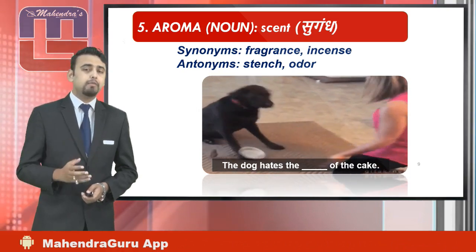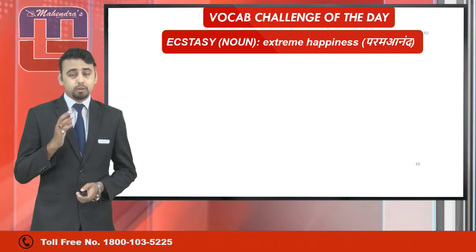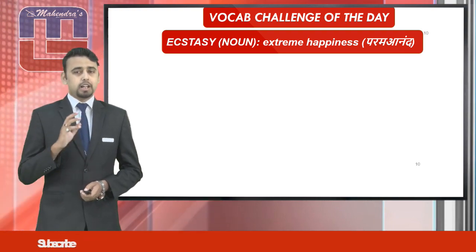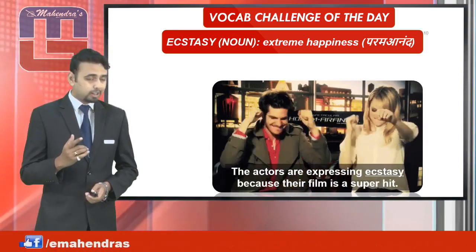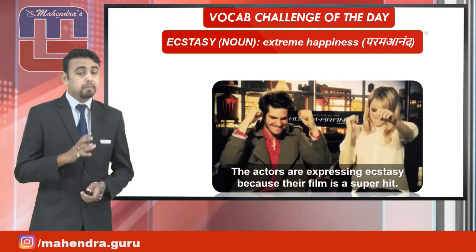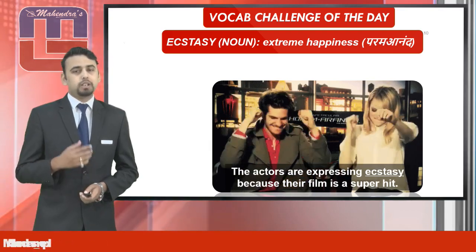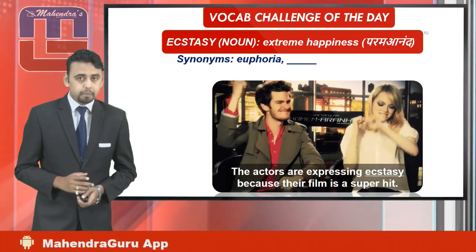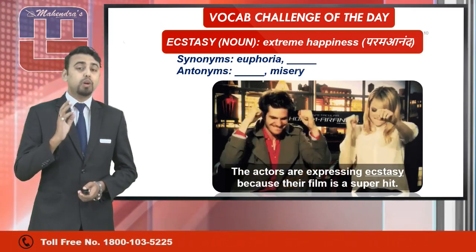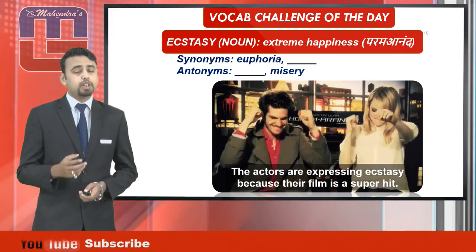That was all in the vocab section. Now let's have a look at the vocab challenge of the day. The word is 'ecstasy,' and ecstasy being a noun means extreme happiness. The usage is: 'The actors are expressing ecstasy because their film is a super hit' — you can see the star cast of the Amazing Spider-Man. The given synonym is euphoria and the given antonym is misery. You have to tell us the missing synonym and missing antonym that we told you in the previous session of Visual Vocabulary.